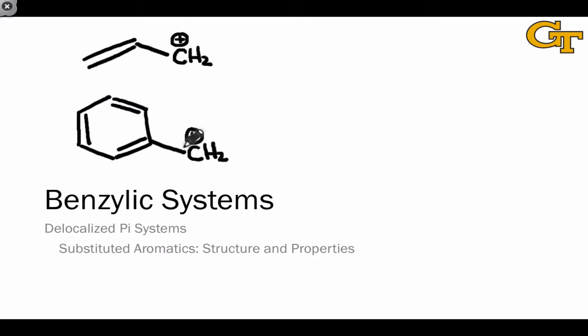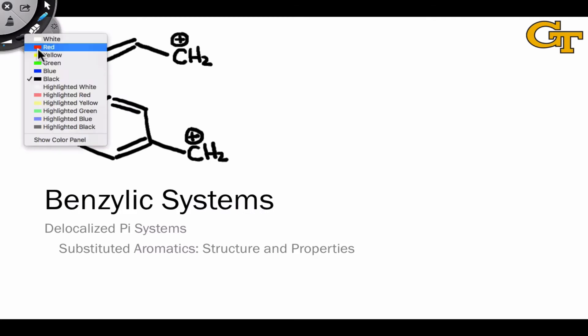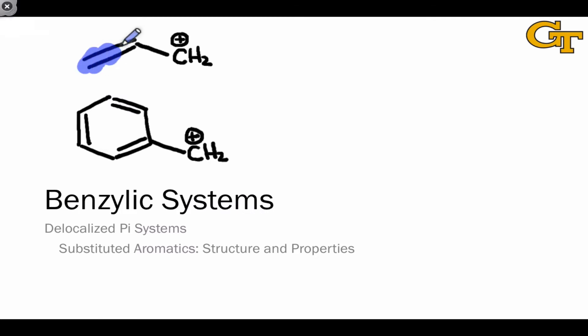There's a structural analogy between the top and bottom molecules in that we can find all of the atoms of the allylic cationic pi system, in this case, within this structure as well. We refer to the top pi system here as an allylic pi system and to the bottom as a benzylic pi system.